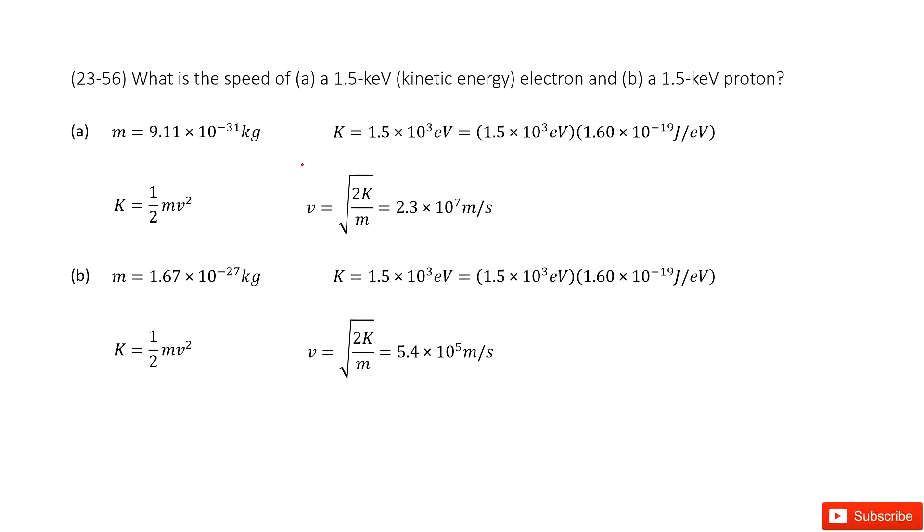Let's look at problem 56 in chapter 23. Chapter 23 is about electric potentials. There we need to find the speed of the electron with the kinetic energy 1.5 keV.